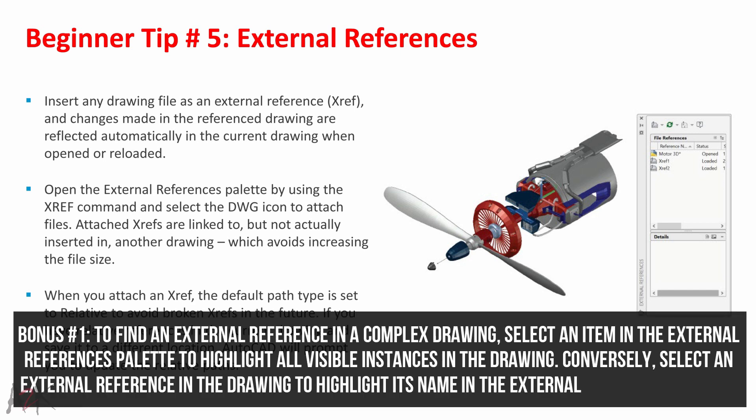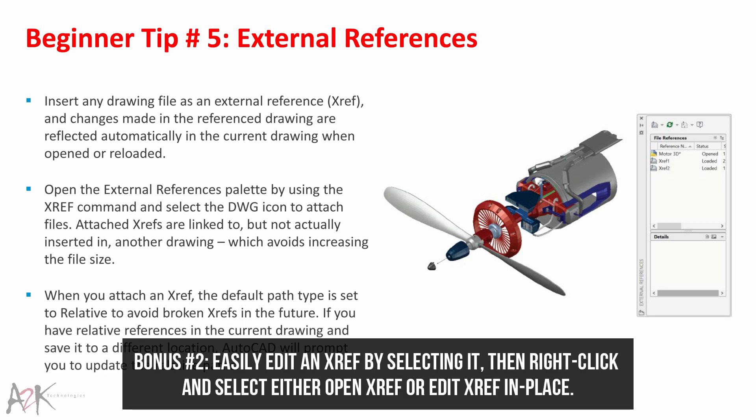Bonus 1: to find an external reference in a complex drawing, select an item in the External References palette to highlight all visible instances in the drawing. Conversely, select an external reference in the drawing to highlight its name in the External References palette. Bonus 2: easily edit an Xref by selecting it, then right-click and select either 'Open Xref' or 'Edit Xref in Place'.